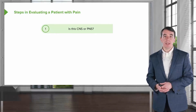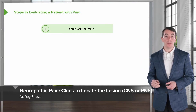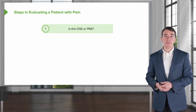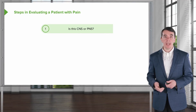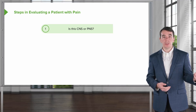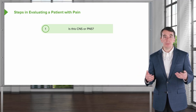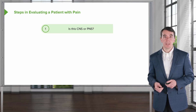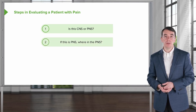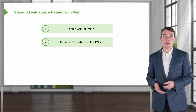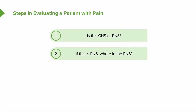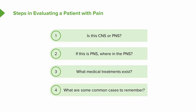How do we evaluate patients with neuropathic pain? There are four steps: first, ask whether this is a central nervous system or peripheral nervous system problem, as both can contribute to neuropathic pain. Second, if the problem is in the peripheral nervous system, localize more specifically where it may be. Third, think about the medical treatments available for this type of pain. Fourth, walk through common conditions where neuropathic pain is a prominent feature.